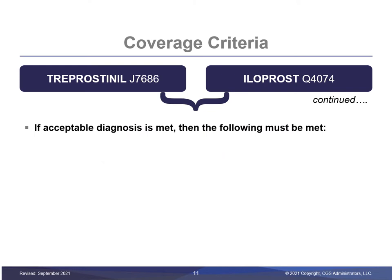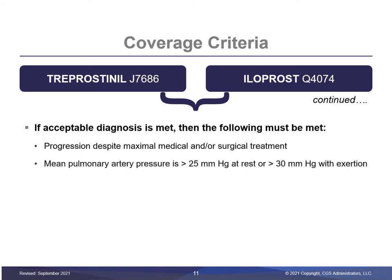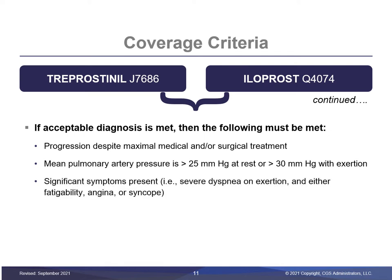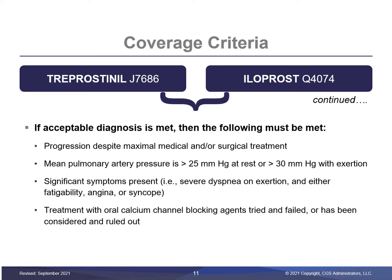If the diagnosis meets the outlined criteria, then additional requirements must be met to complete coverage — and note that all are required. The pulmonary hypertension has progressed despite maximal medical and/or surgical treatment of the identified condition, and the mean pulmonary artery pressure is greater than 25 mmHg at rest or greater than 30 mmHg with exertion, and the beneficiary has significant symptoms such as severe dyspnea on exertion, and either fatigability, angina, or syncope, and treatment with oral calcium channel blocking agents has been tried and failed or has been considered and ruled out. If the patient has a qualifying diagnosis and meets these additional requirements, then treprostinil and iloprost, as well as the related nebulizer and accessories, may be covered per the LCD.